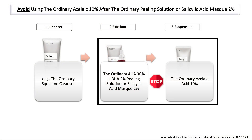The same applies to The Ordinary Peeling Solution, which includes 30% AHA and 2% BHA, as well as the Salicylic Acid 2% Mask. Those are also two products from The Ordinary that I do not recommend using in the same routine as the Azelaic Acid Suspension. Again, keep them separate to make sure no skin irritation occurs.